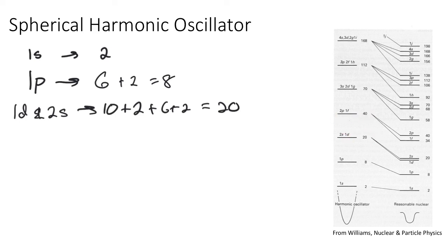However, as we go up, we don't produce any more, except maybe the 168, once we get up to the highest level. So the spherical harmonic oscillator, like the square well, produces some of the energy levels, the shell numbers that we might expect, the magic numbers, but not all of them.